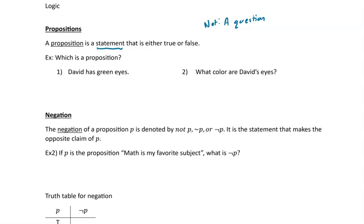For example, which of these is a proposition: 'David has green eyes' or 'What color are David's eyes?' The first one is a proposition — whether or not he has green eyes, it is either true or false. For number two, 'What color are David's eyes?' is just a question, so that is not a proposition.